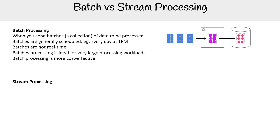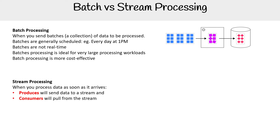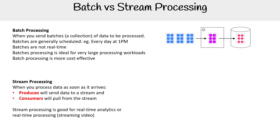Then we have stream processing. This is when you process data as soon as it arrives. You'll have producers which send data to a stream, and consumers which pull data from a stream. A lot of times the stream will look like a pipeline and data can be held in that stream for a period of time, giving you better reusability of data if you need it for multiple consumers. Stream processing is good for real time analytics, real time processing — like streaming videos — anything that requires data right away. For that purpose, it is much more expensive than batch processing.